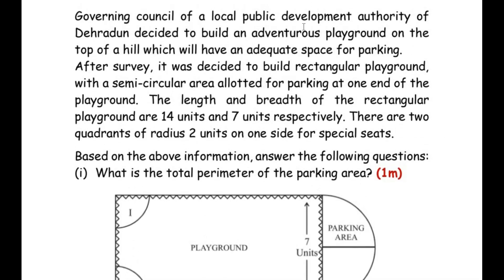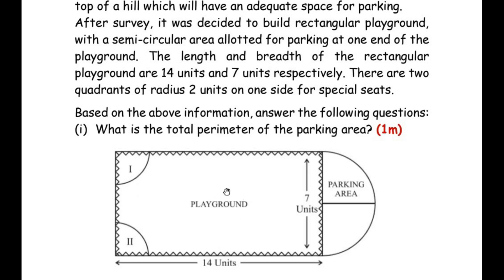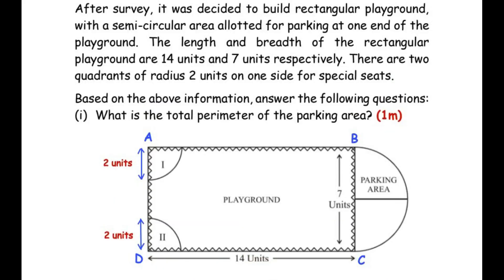Let us understand the question. The governing authority of Dehradun decided to build a playground in the shape of a rectangle, as shown in the diagram. The parking area is on one side of the rectangle in the shape of a semicircle. The length and width of the rectangle are 14 units and 7 units. There are two quadrants at the corners assigned for special seats. For the first question, we need to find the total perimeter of the parking area. The shape of the parking area is a semicircle, so we consider its diameter and circumference. From the diagram, the width of the rectangle becomes the diameter of the semicircle.